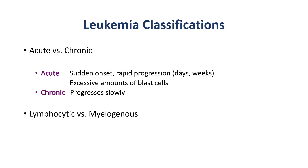Leukemia is first classified depending on how fast the disease progresses. In acute leukemia, the disease starts suddenly and progresses rapidly within days and weeks, resulting in large numbers of immature white blood cells, or blast cells. In chronic leukemia, the disease progresses much more slowly and results in relatively mature but abnormal white blood cells.